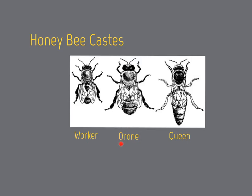Drones, on the other hand, are male bees whose sole purpose is to fertilize queen bees. The queen has the longest lifespan of the three, and her job is to lay over a thousand eggs per day. Worker bees are infertile females, drones are fertile males, and queens are fertile females.